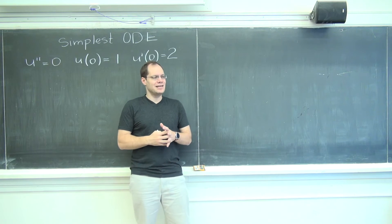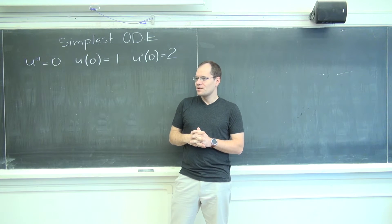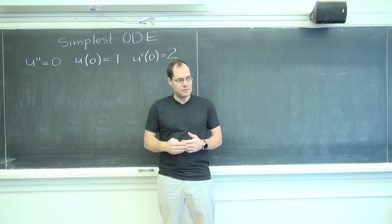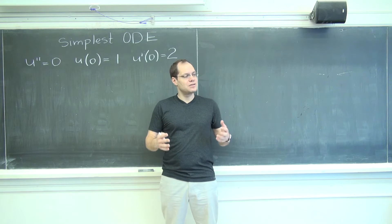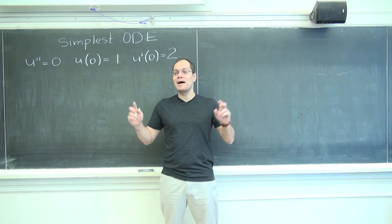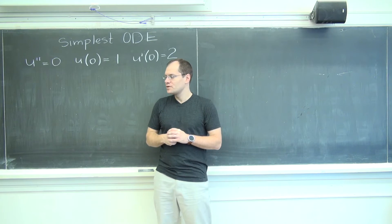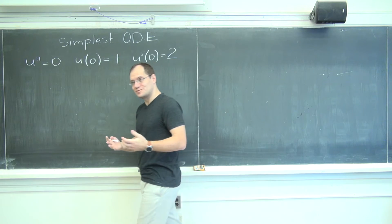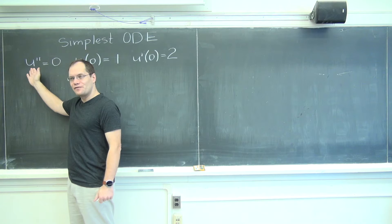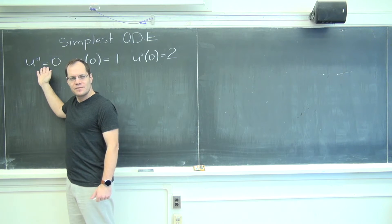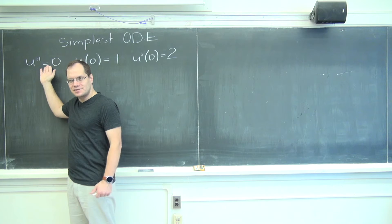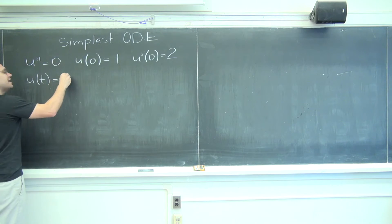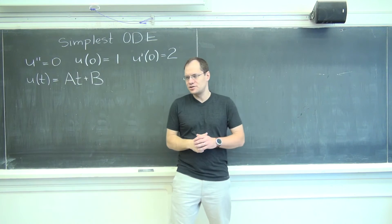I think most of you did it correctly, but I'm not sure that you saw that what we've discussed until now actually applies — that this satisfies the pattern of what we've talked about so far. So there are two ways to solve this extraordinary equation. One is to speak your way through it: we're asked for a function whose second derivative is zero. Well, then its first derivative must be a constant, so the function itself must be a linear function.